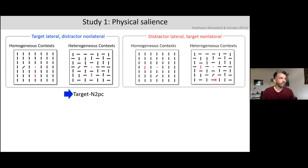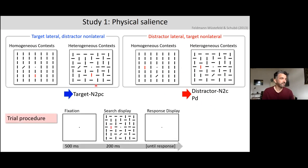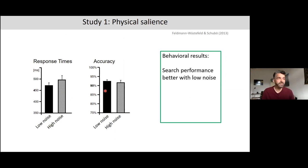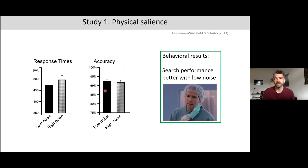We measured the target N2PC as a measure of enhancement, the distractor N2PC as a measure of attentional capture, and the PD component to assess suppression — comparing these across low-noise and high-noise conditions. The trial procedure was simple: a fixation dot, the display, and then participants responded with a button press. The results showed that with low noise, performance was better — shorter response times and higher accuracy. The EEG then allows us to understand why by separating these three processes.